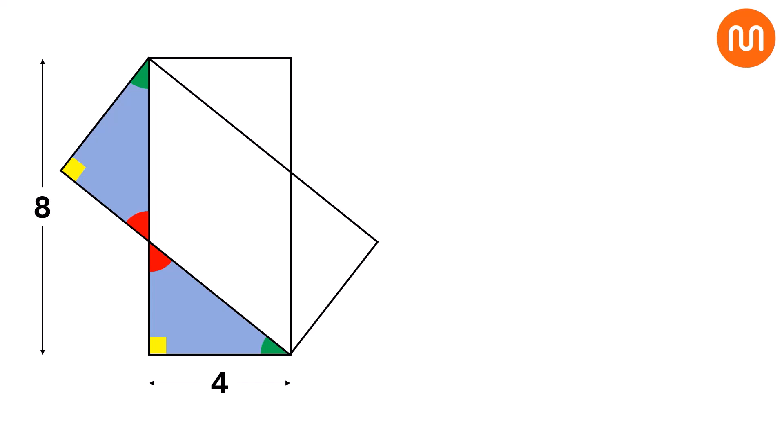Now, notice that the leg of the upper triangle is equal to the base of the rectangle. So, this length is 4. Since the triangles share two congruent angles and a side, they must be congruent by the angle-side-angle theorem. Let's label the other leg of this triangle as x.